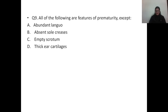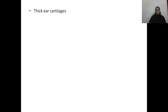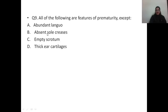Question number nine: all of the following are features of prematurity except — A) abundant lanugo, B) absent sole creases, C) empty scrotum, D) thick ear cartilages. The correct answer is option D, thick ear cartilages. For gestational assessment the New Ballard Score is used. Abundant lanugo, absent sole creases, and empty scrotum are all features of prematurity, whereas thick ear cartilage is a sign that develops as the child's maturity approaches term.